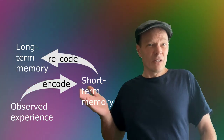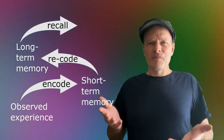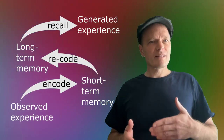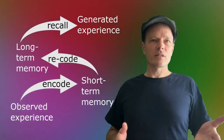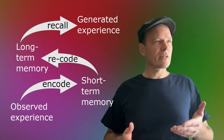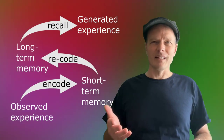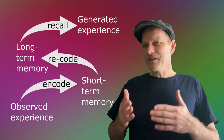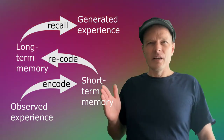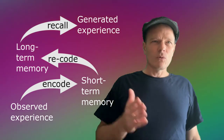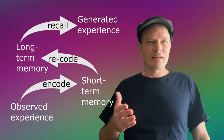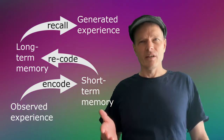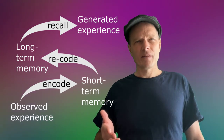Later, when you're recalling that experience, that cortical mini-column generates signals that cause you to have a similar experience again. One thing that this process makes abundantly clear is that second-order awareness is implemented with information, just like first-order awareness.